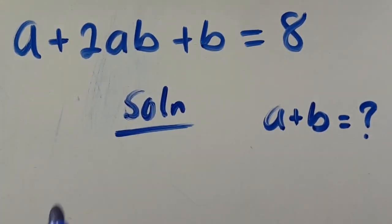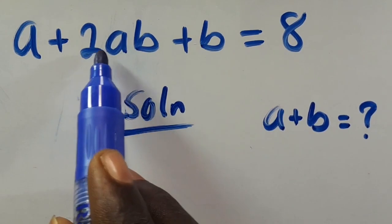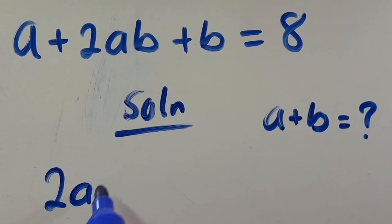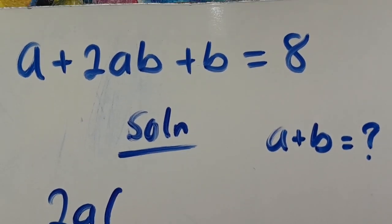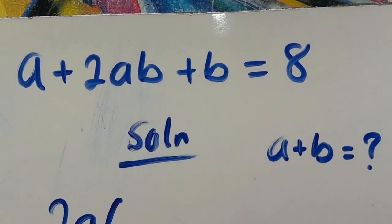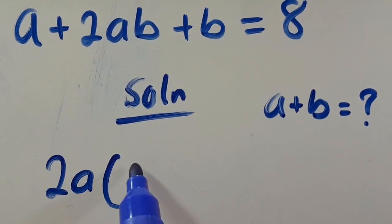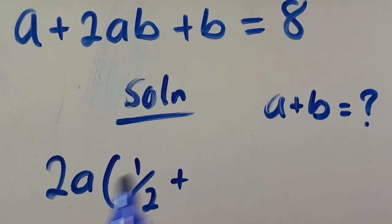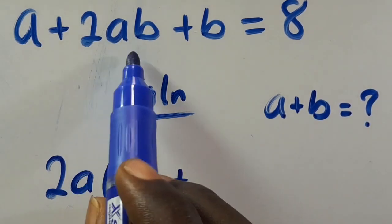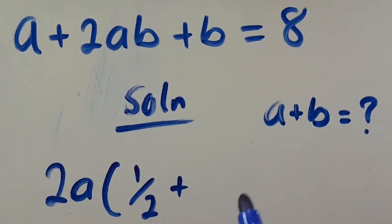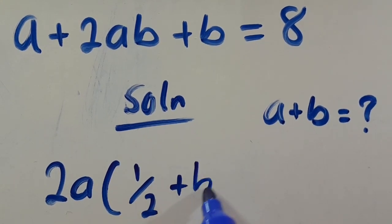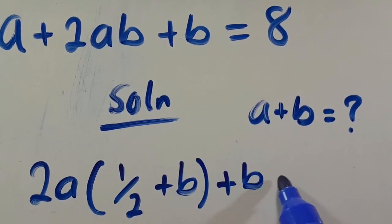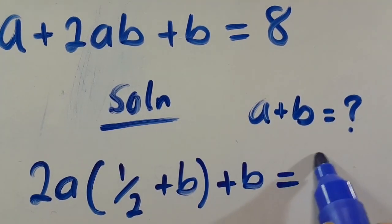From here, we have 2ab. Let us factor 2a outside. When we factor 2a, we get a divided by 2a equals 1 over 2, plus 2ab divided by 2a gives us b. Then plus b equals 8.